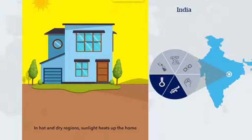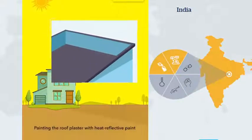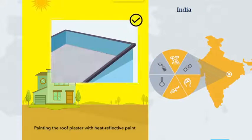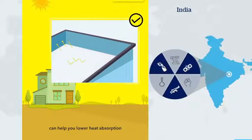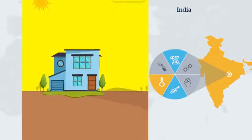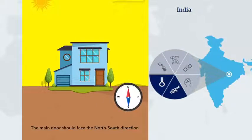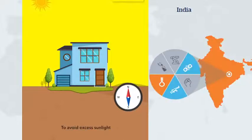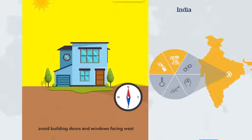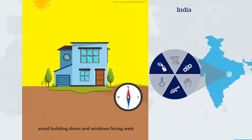In hot and dry regions, sunlight heats up the home. Painting the roof plaster with heat reflective paint can help you lower heat absorption. The main door should face the north-south direction. To avoid excess sunlight, avoid building doors and windows facing west.